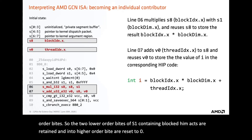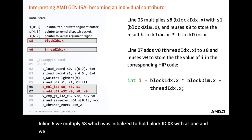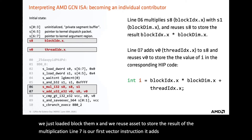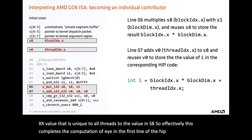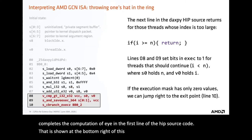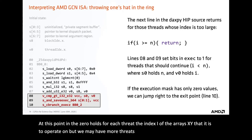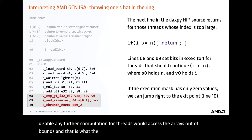In line 6, we multiply S8 — which was initialized to hold block ID X — with S1, which now holds block dim X, and store the result back in S8. Line 7 is our first vector instruction: it adds V0, the thread ID X value unique to each thread, to the value in S8. This completes the computation of index I from the first line of the HIP source code. At this point, V0 holds for each thread the index I of the arrays X and Y that it is to operate on. Since we may have more threads than array elements, we must disable further computation for threads that would access the arrays out of bounds — and that is what the last three lines of the first assembly block take care of.